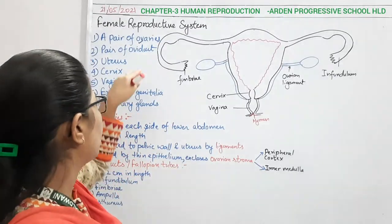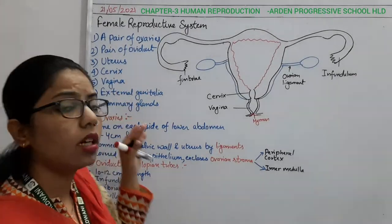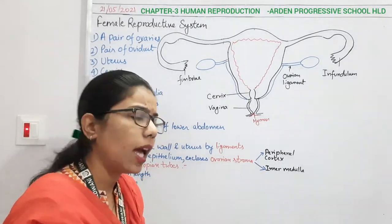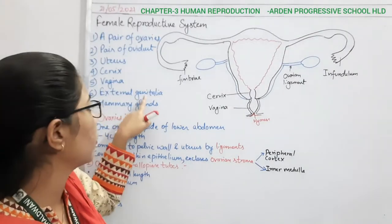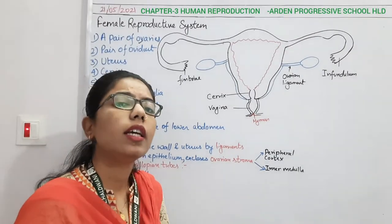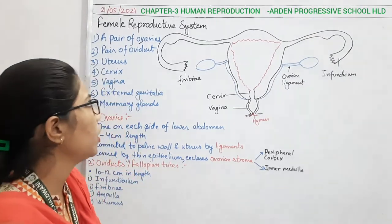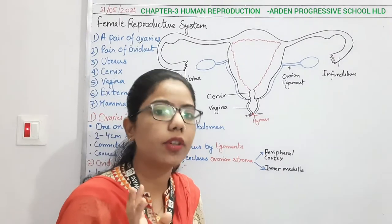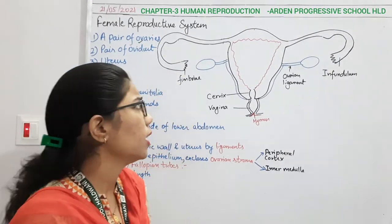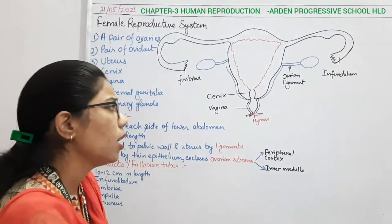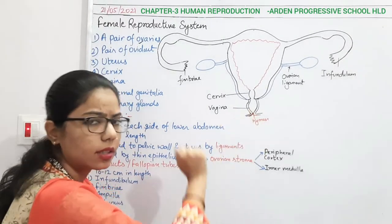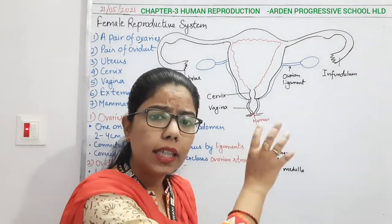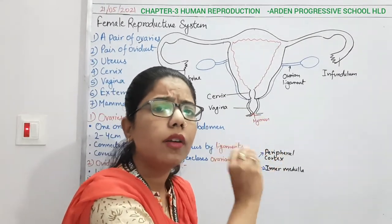So ovaries, uterus, cervix, and vagina will compose the accessory organs, along with external genitalia. One by one we will understand how these are formed and what is the function of each component. Here I have shown one diagram of the female reproductive system, and this diagram is very important because it shows each and every part.